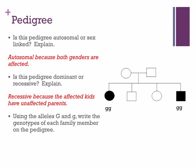Since it's recessive, it's opposite from the previous problem — people who are unaffected get capital letters. What would mom and dad's second letter have to be? Looking at their kids — the affected ones are homozygous recessive (two lowercase g's). One lowercase g came from mom and the other from dad. For the unaffected kids, they could have gotten their capital G from either parent. We don't know for sure if dad gives a capital G or lowercase g, so we put a dash.